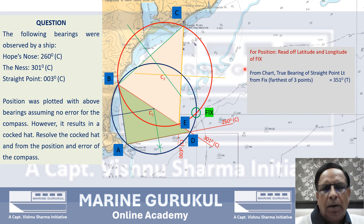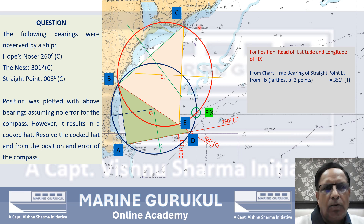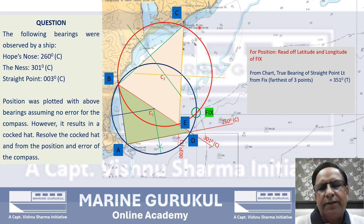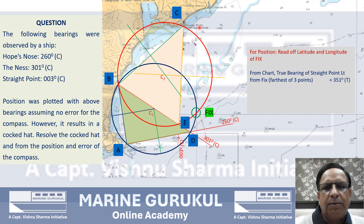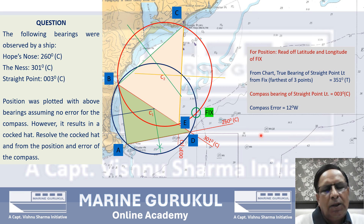For the compass error, we read the true bearing of the farthest of the three points — in this case, Straight Point Light. The farthest point is chosen because if two points are close together, a slight misalignment of the parallel ruler will amplify the error more than if the points are far apart. The true bearing of Straight Point Light read from the chart is 351° True. The compass bearing of Straight Point Light given in the question is 003°. Comparing these two, we get the compass error: 12° West. This completes the question by the method of Resolution of the Terrestrial Cocked Hat.